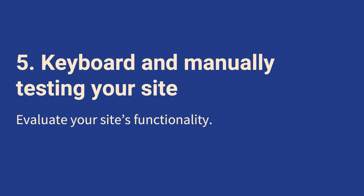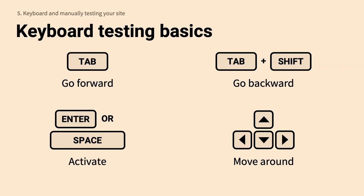Now onto keyboard and manual testing. For keyboard testing basics: Tab moves you forward; Shift+Tab moves you backward; Enter or Space will usually activate a component — triggering a link, button, or toggling dropdown menus; and your arrow keys move around between different elements. Depending on what browser you're using, you may have to go into browser preferences to enable keyboard commands. In Firefox, for example, you have to go into preferences and allow keyboard navigation.